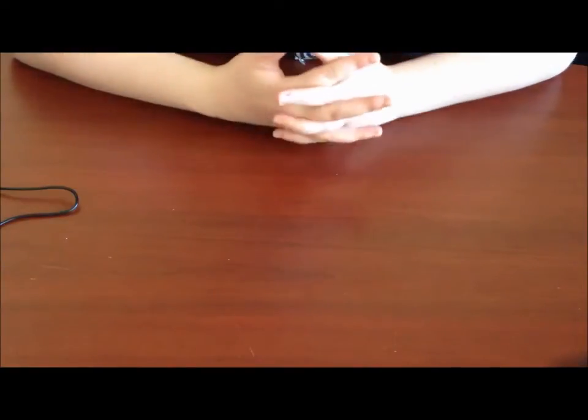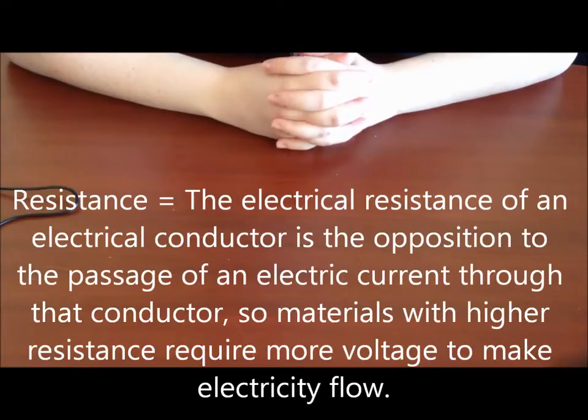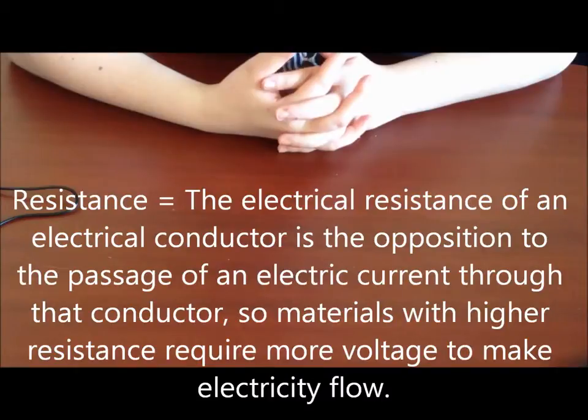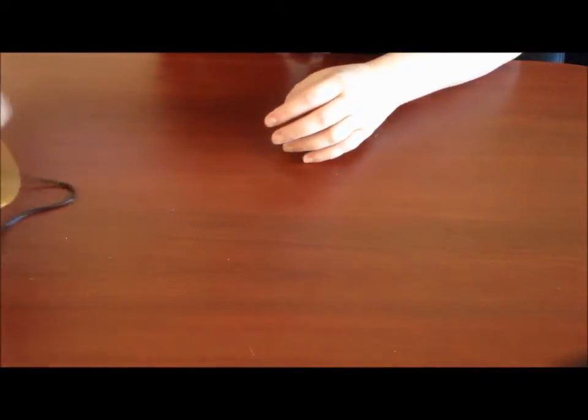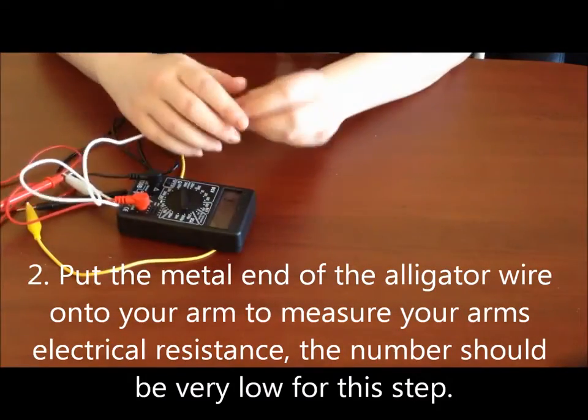So first things first, let's talk about what exactly we're measuring here. We are measuring our body's resistance. Your body has a slight electric charge and this is how we measure heart rate. The first thing we're going to do is we are going to measure our body's resistance without any kind of electrode at all.